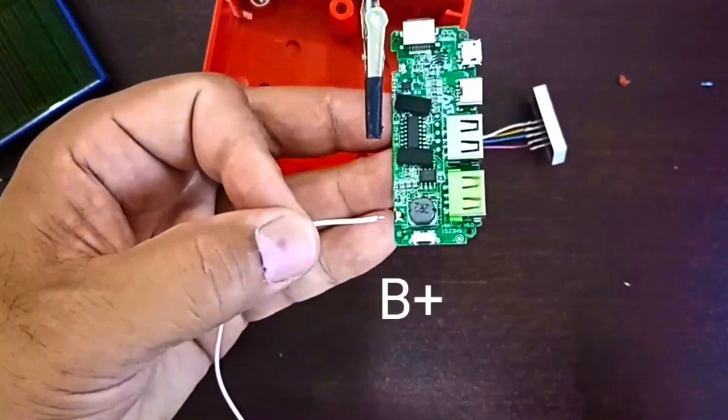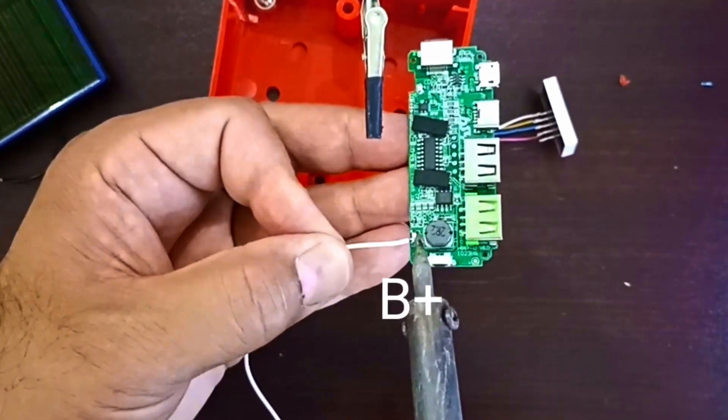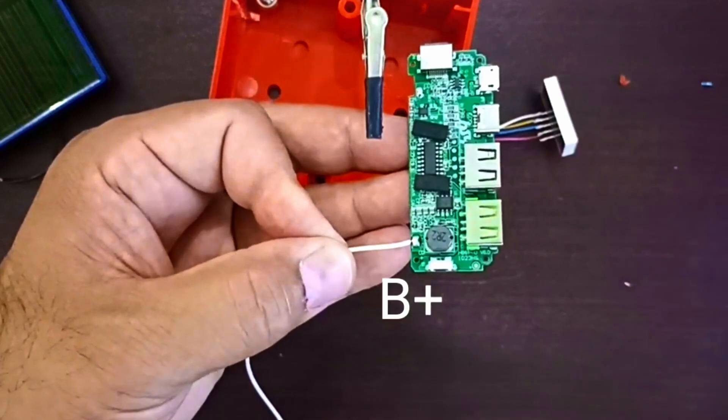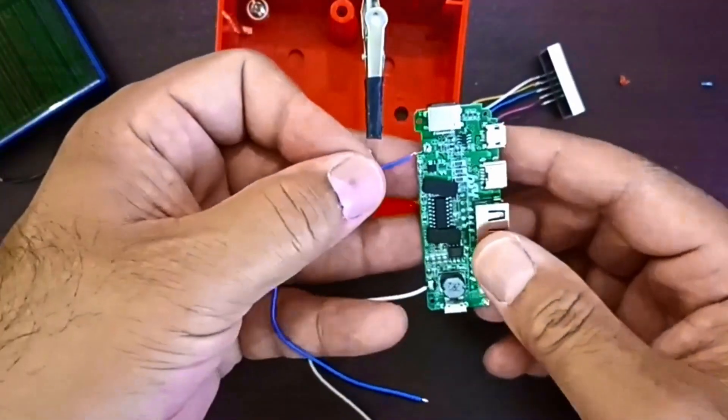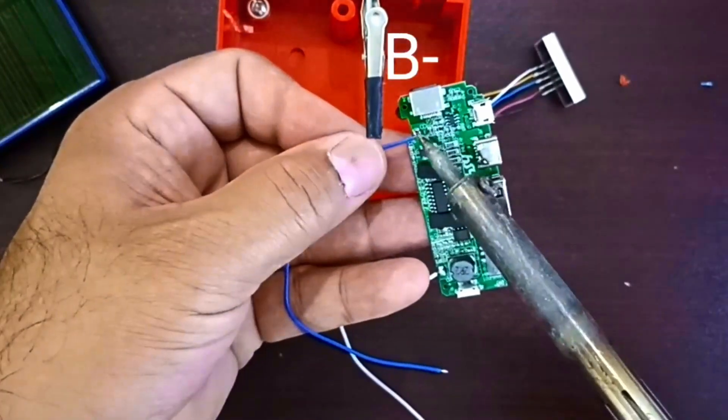Connecting the battery positive to the board's B plus pad, white wire in place. Then battery negative to B dash dash, blue wire secure.